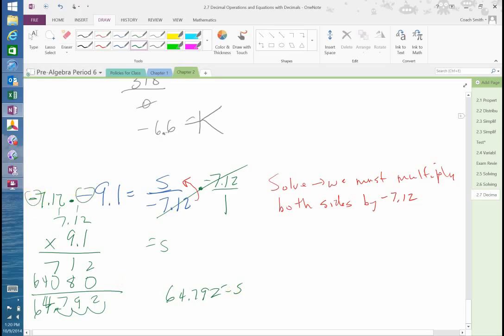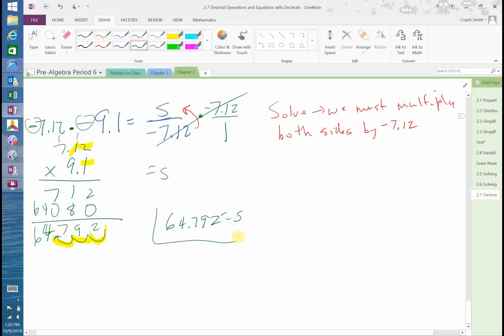64.792 is equal to S. And you have two negatives, so the answer is positive. How do you know where to put the decimal? Huh? How do you know where to put the decimal? Oh, you count. I have 1, 2, 3 places behind the decimal. And so we go once, twice, three times.